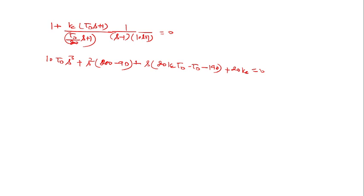So the necessary condition for Routh stability criteria is that every term in the first column of the Routh array should be of the same sign and also non-zero. So as you know: S cubed, S squared, S, S to the power 0. If you write all the coefficients, then 10 tau_d here, then second term 200 minus 9 tau_d, and then here 20 K_C tau_d minus tau_d minus 190, and here 20 K_C.